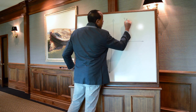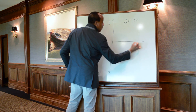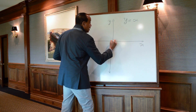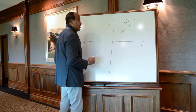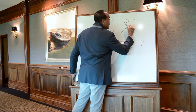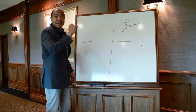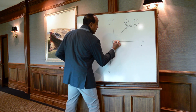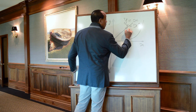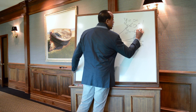The line graph y equals x — what does that line graph look like? The line graph y equals x to the nth power — what does that line graph look like? And y equals negative x to the nth power?